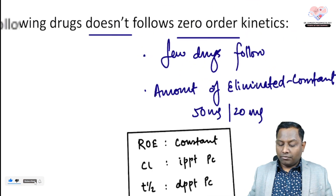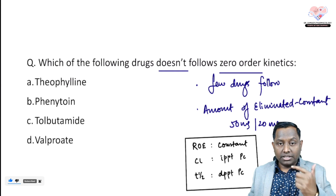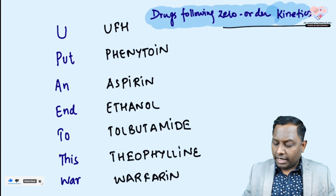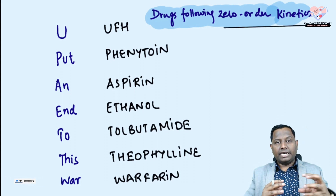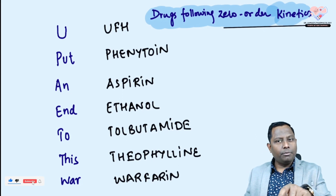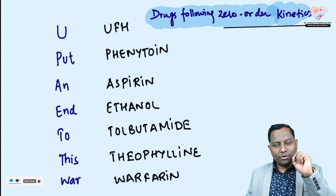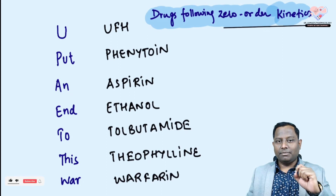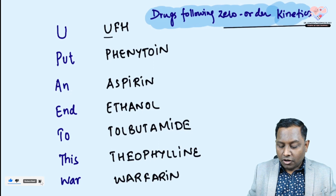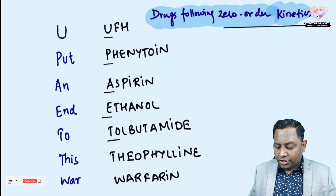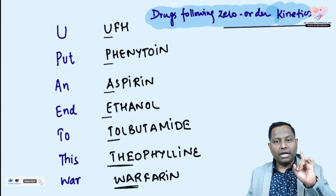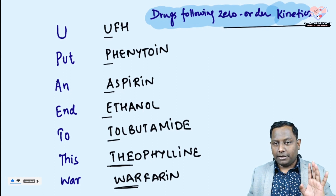To remember all drugs following zero-order kinetics, I use a simple mnemonic story: 'Getting zero in an examination is like a war, and you put an end to this war.' The drugs are: unfractionated heparin, phenytoin, aspirin, ethanol, tolbutamide, theophylline, warfarin — 'you put an end to this war.'